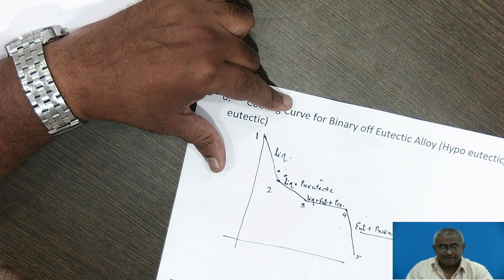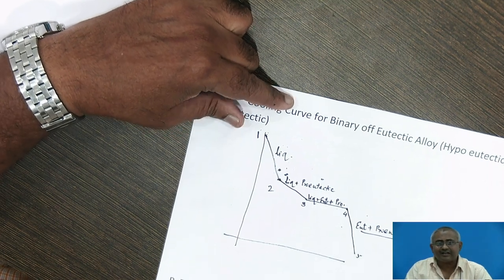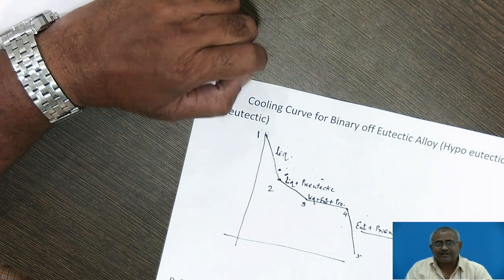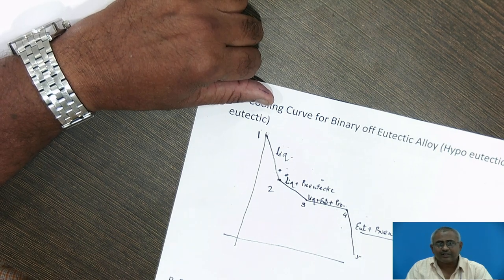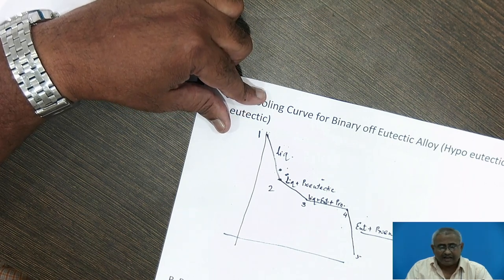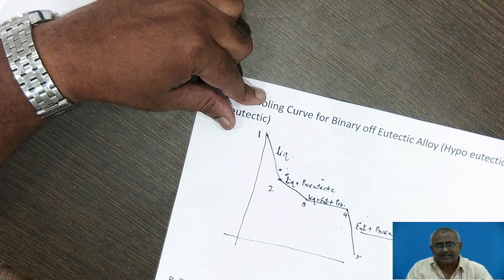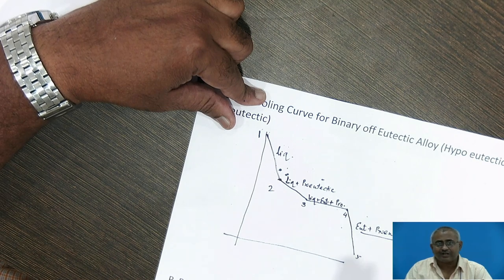Cooling curves for every composition in an alloy system will be similar, but the temperatures at which phase transformation begins and is completed will differ. From these cooling curves we can define liquidus temperature and solidus temperature. Liquidus temperature is the temperature at which solidification begins during cooling, and above the liquidus temperature there is always liquid phase present. Solidus temperature is the temperature at which solidification is completed during cooling, while liquefaction begins during heating.